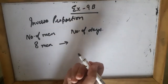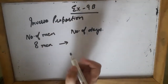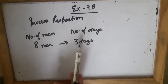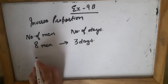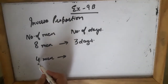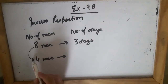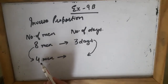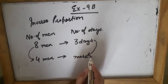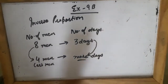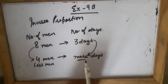Suppose I have only four men instead of eight. Now, if I have less people, will they take less days to complete the work? No, it cannot be. If the number of men have decreased, it means they will take more days to complete the work. I am having less men and they will take more days. Here the value has decreased but the number of days will increase.